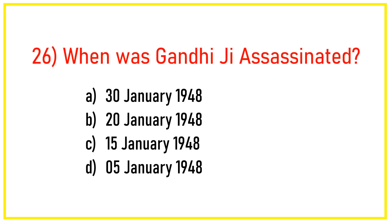Q26. When was Gandhiji assassinated? Answer: Option A — 30 January 1948.